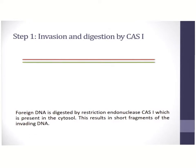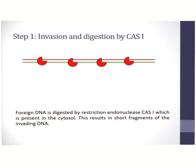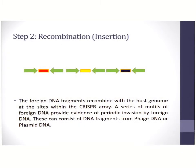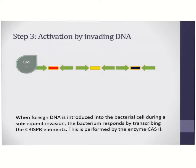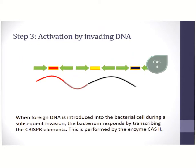Let us look at the steps graphically. The first step involves invasion and digestion by the Cas1 enzyme. The DNA is the phage DNA and the red dots represent the enzyme Cas1. At the end of this process, short DNA fragments are obtained. The second step involves recombination or insertion of the short DNA fragments into the genome at the CRISPR array. Upon invasion by DNA from the phage, the enzyme Cas2 will transcribe this entire RNA strand — so Cas2 is like a polymerase that polymerizes the transcription of the RNA strand.